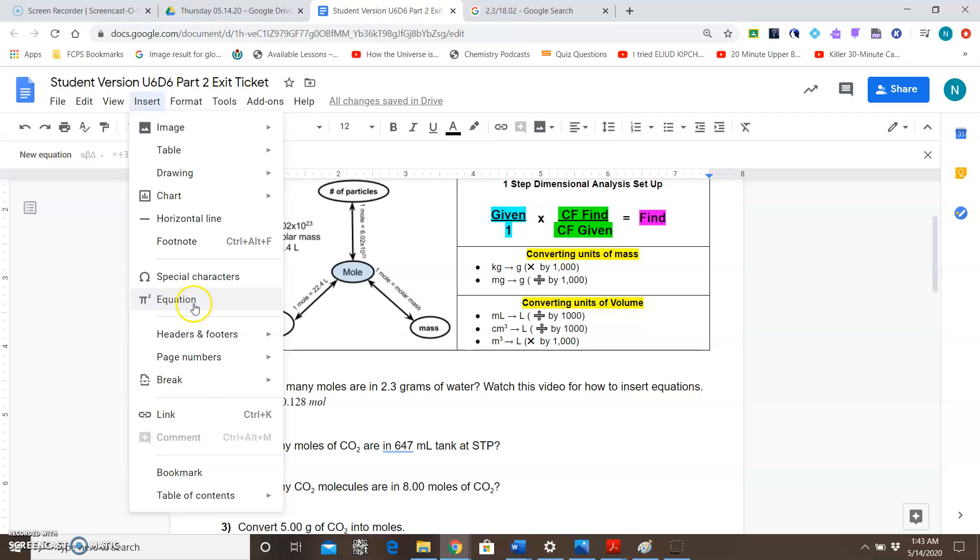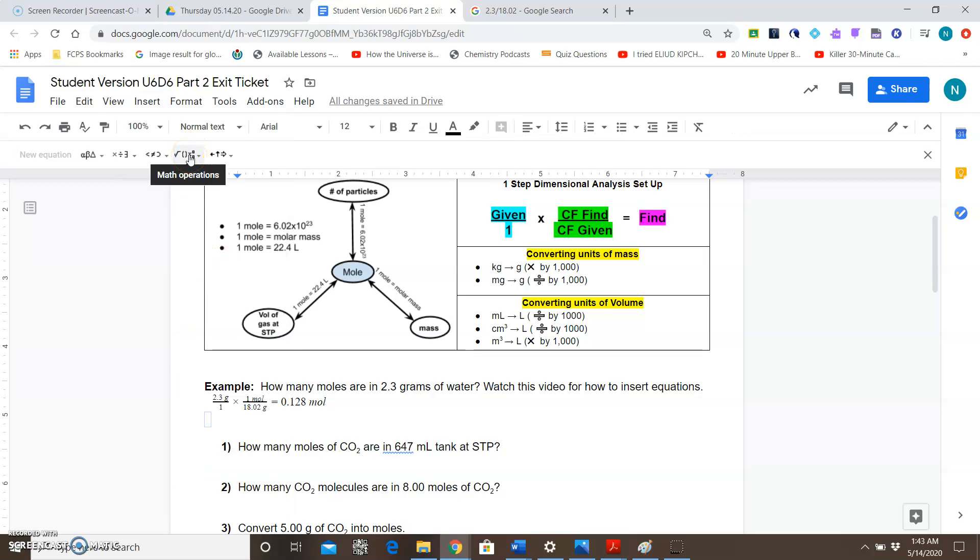So once again, you would go to insert, we're going to insert, go to equation, and then you would click on math operations. Once again, I'll write this as a fraction just so you can see it. So let's say for your conversion factor, you need to have 1 mole over Avogadro's number. So the first thing we'll do is we'll type the fraction and we'll do 1 mole on top. And again, I use the right arrow to get into my denominator. And now I'm ready to do my Avogadro's number. So 6.02 and now I want to do times. So I'll just hit X for times in this case. 10. Now I want 10 to the power of 23. How do I get the power?